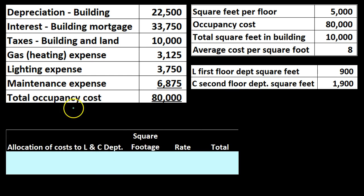Here's our data. Total occupancy costs include depreciation on the building, interest on the building, land taxes, gas, lighting, and maintenance — totaling $80,000. These costs affect multiple departments in the same building, so we want to allocate that $80,000 in some fair way. We could apply different activity bases to each individual line item, but since they're all building-related, we'll add them all up and use one allocation method for all occupancy costs.